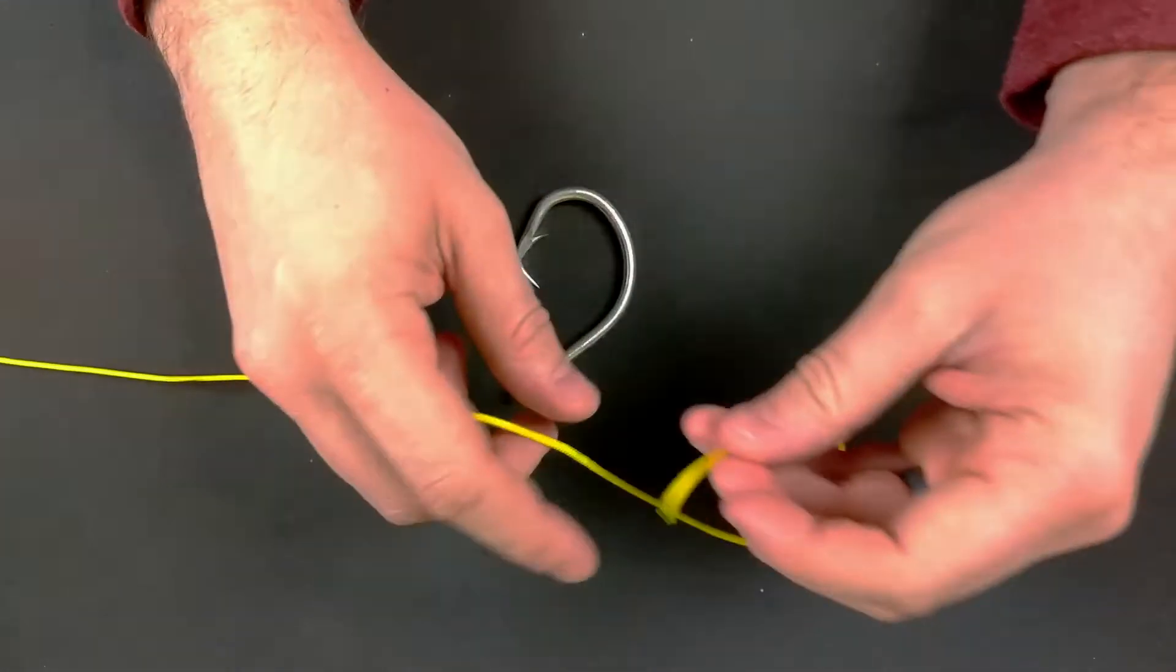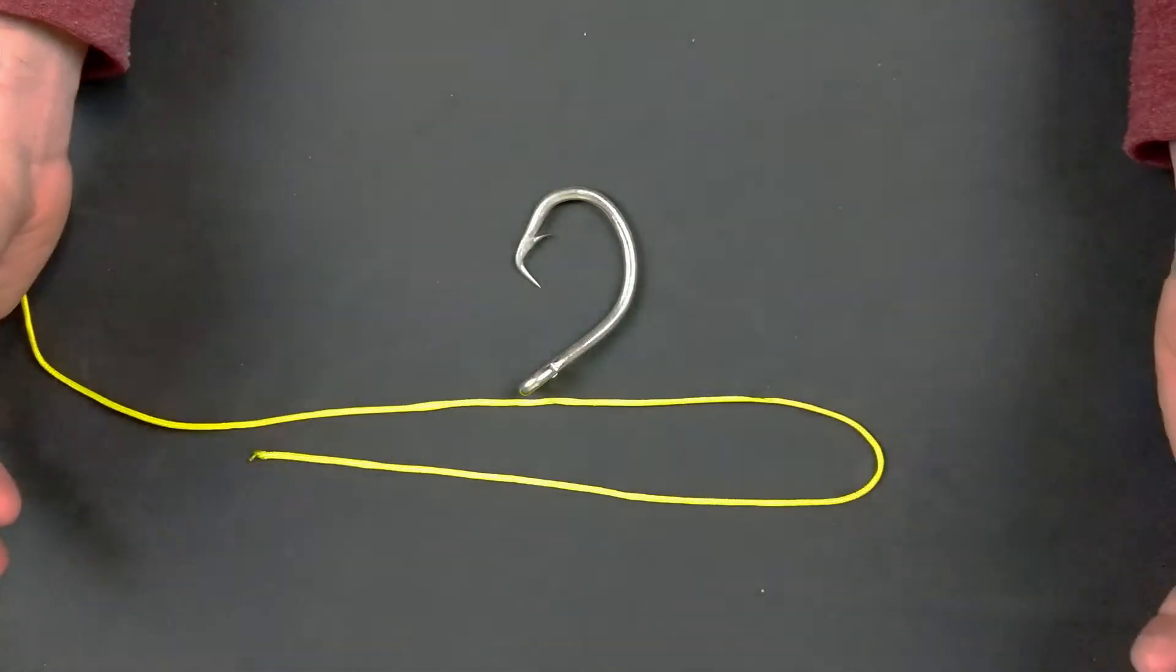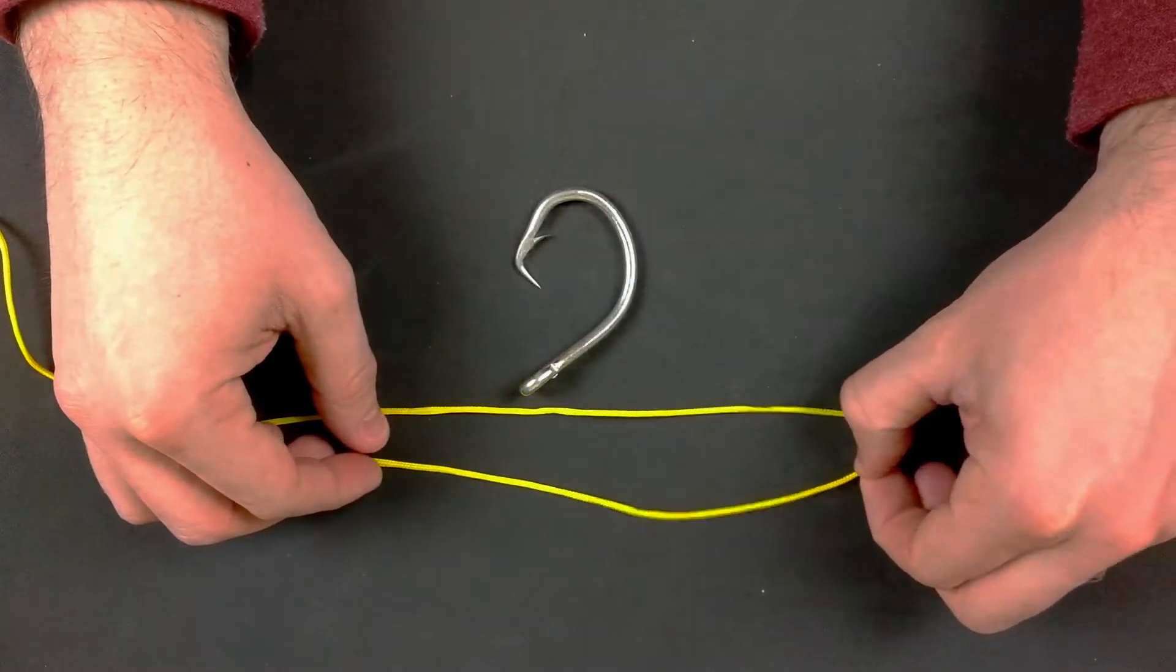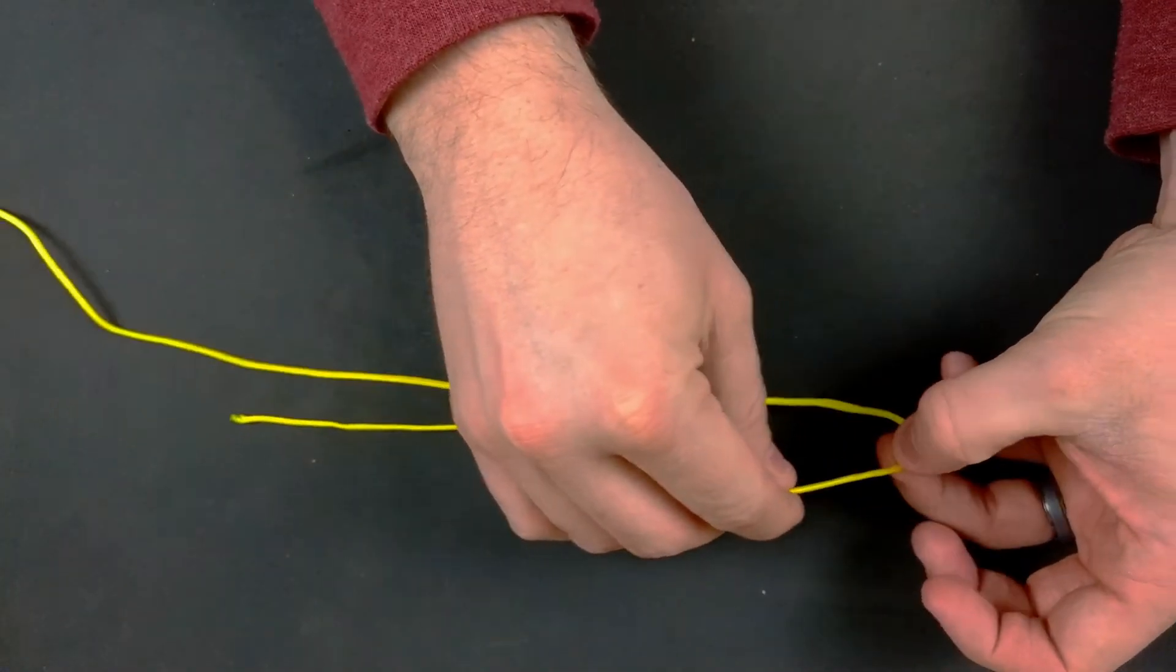First things first, we're going to begin by folding over our line. I like to leave myself about 8 inches or so in this process. This makes things easier when we go to continue the knot later.